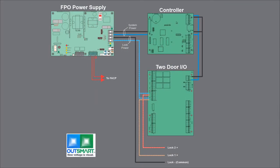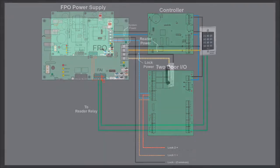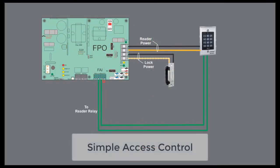We can also use it to power a small access system when a fire alarm interface is needed to control egress doors with mag locks and the access control system has the door control relays. A third use for the FPO alone is to directly control a door from a reader with an included relay, such as used in nursing homes for Alzheimer's wards or other similar locations.